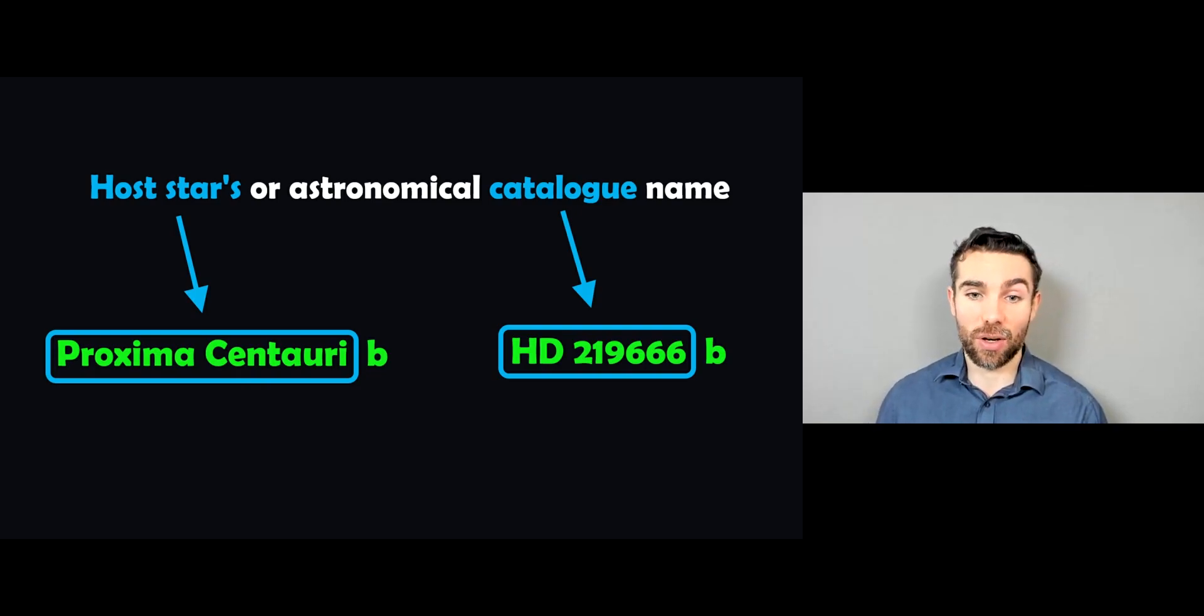Proxima Centauri is one of our nearest stars. And the planet orbiting it will be given its name at the beginning of it. So it takes the host star's name to start with. Or if it's from an astronomical catalogue, it would take the catalogue name of that star instead. So HD 219666 would be the catalogue name of this particular star.